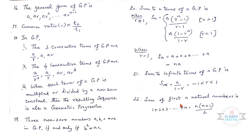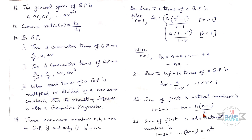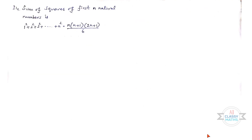Twenty-second point: Sum of first n natural numbers is 1 + 2 + 3 + ... + n = n(n + 1)/2, in the special series. Twenty-third: Sum of first n odd natural numbers is 1 + 3 + 5 + ... + (2n − 1) = n².